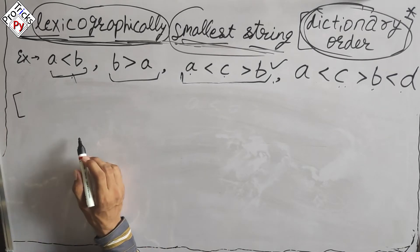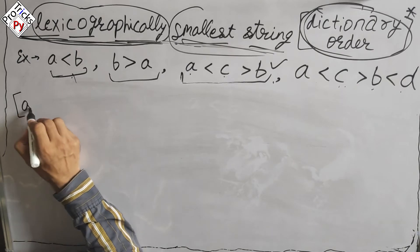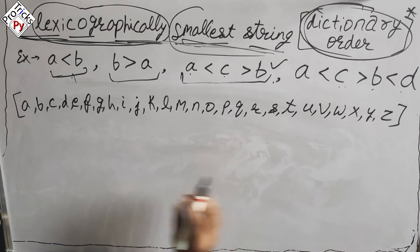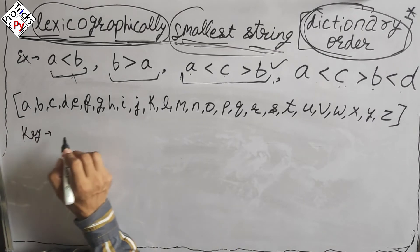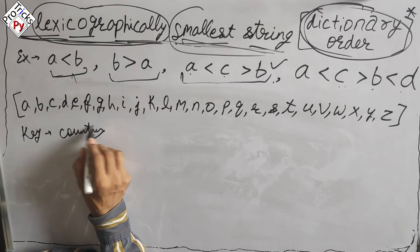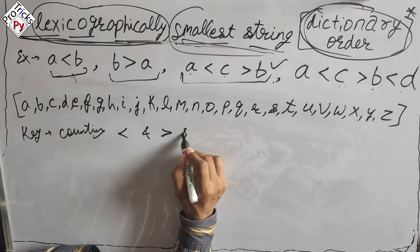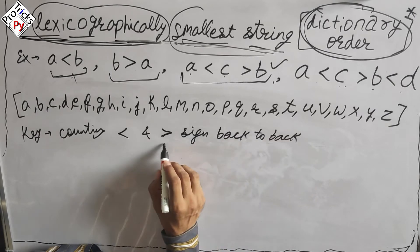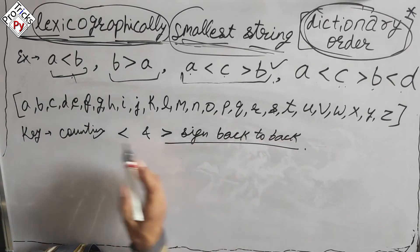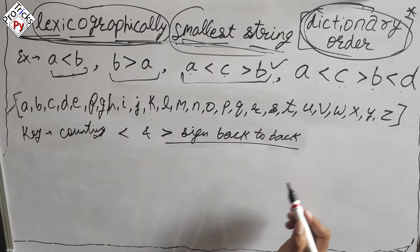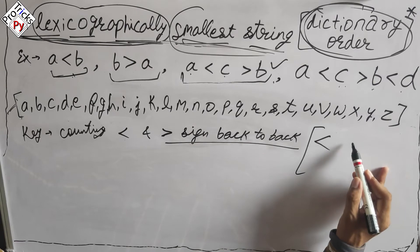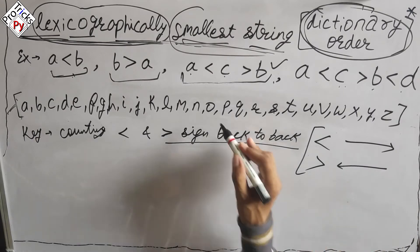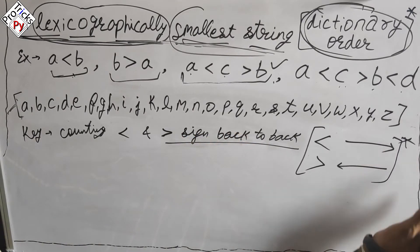For the solution, we make an array of all 26 alphabets. The key concept is: count the consecutive less-than and greater-than signs back to back, then choose characters from this array. If we have a less-than sign, we move from left to right in the array; if we have a greater-than sign, we move from right to left while printing characters.